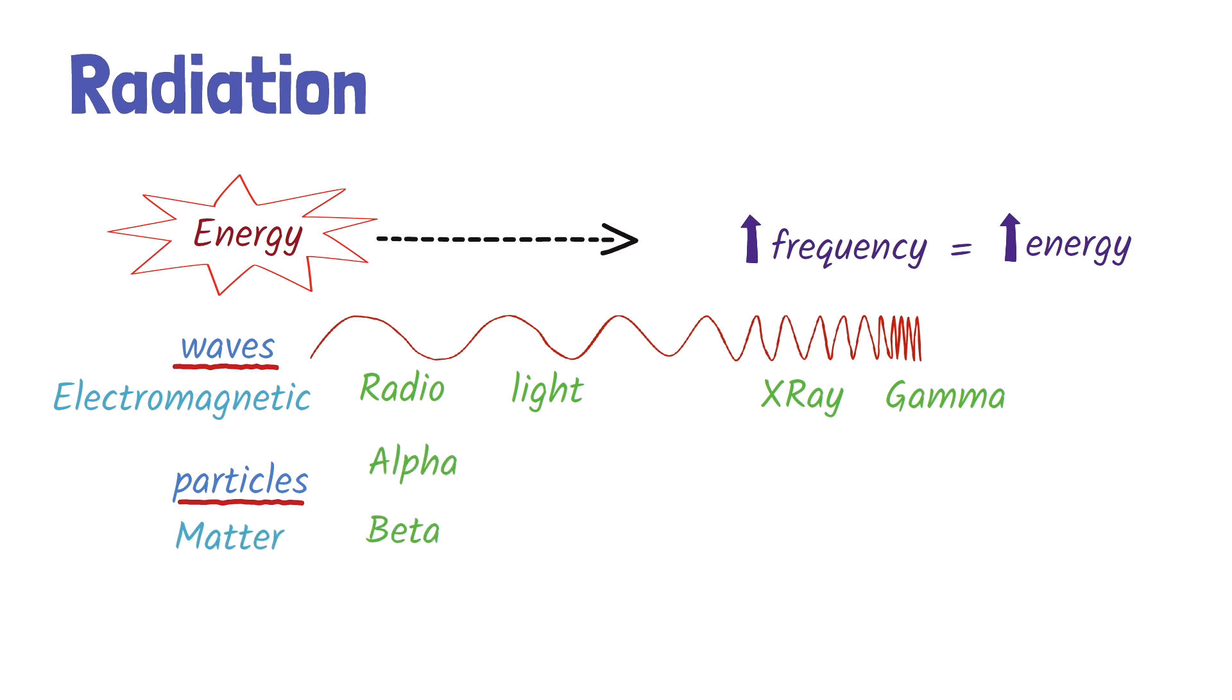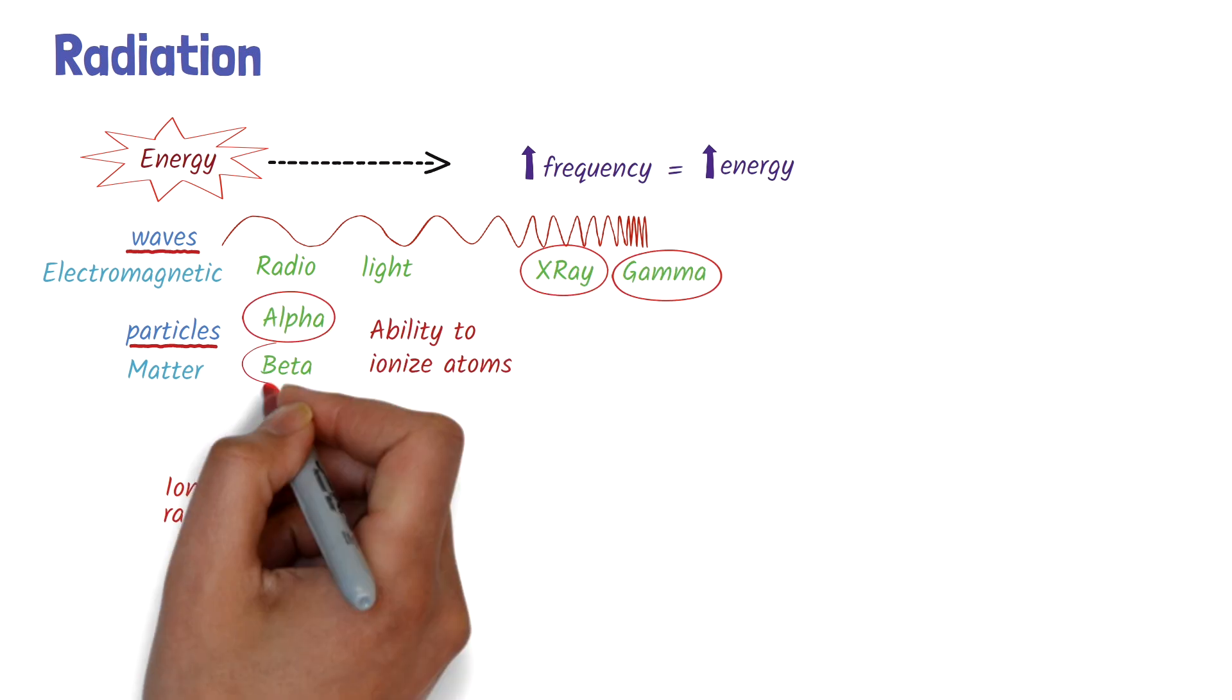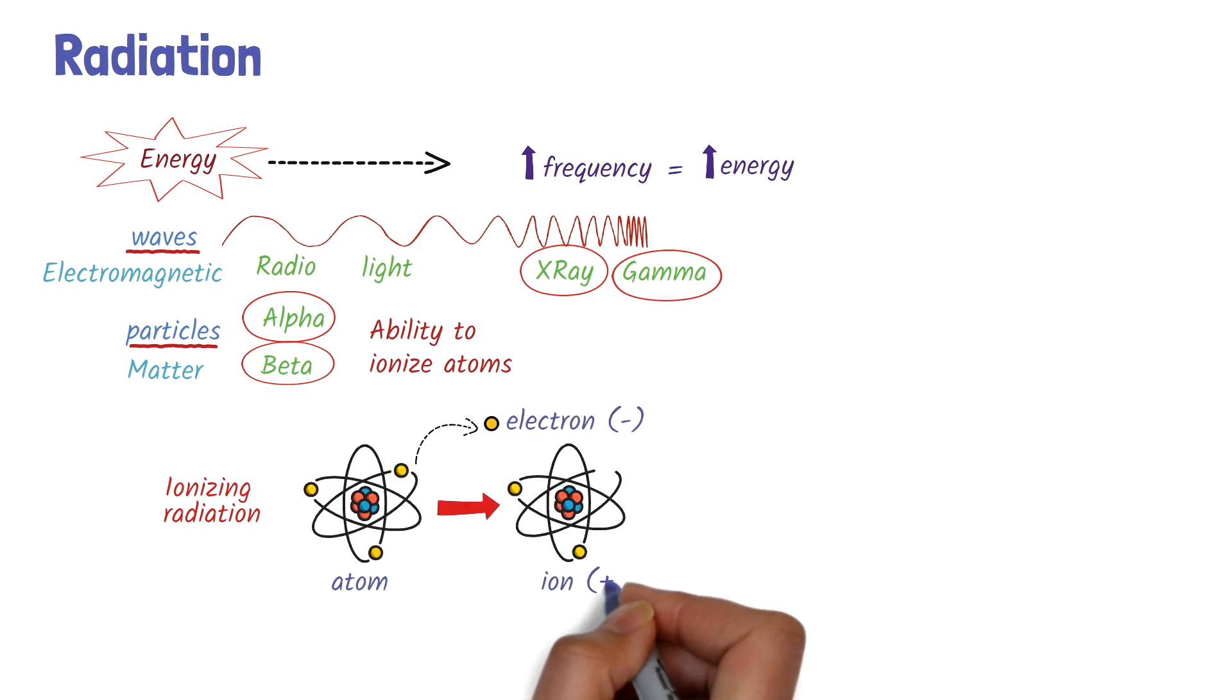Now, one of the key ways we classify radiation is by its ability to ionize atoms. Ionizing radiation, such as X-rays, gamma rays, alpha and beta particles, has enough energy to remove electrons from atoms, creating a positively charged ion in a process called ionization.